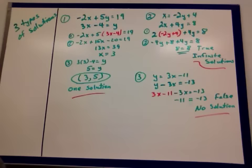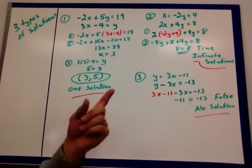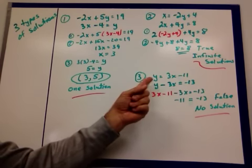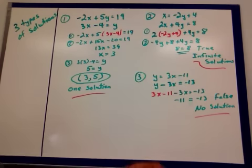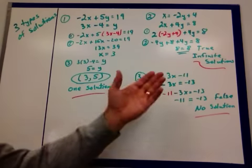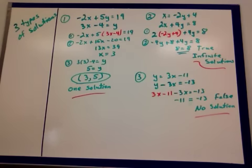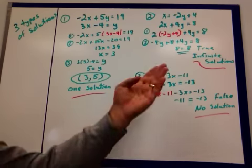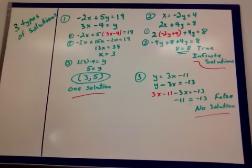That's the substitution method. It works best when one of the equations, or both, are in y equal or x equal. So that you can substitute it into the other equation, solve for that variable, plug it back into the first one, and solve for the other letter. We write the answer as an ordered pair, because that's where they would intersect if we graphed them. All right? We'll look at some more examples of this tomorrow. See you then. Have a good one.